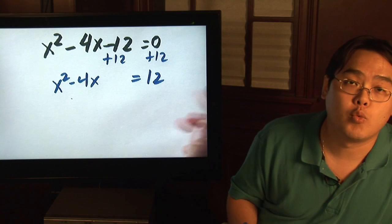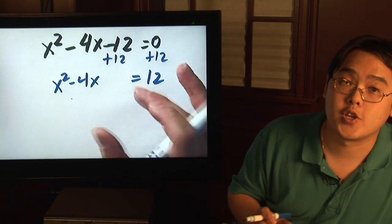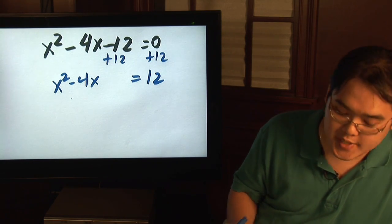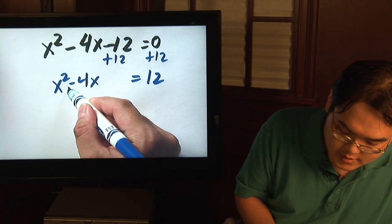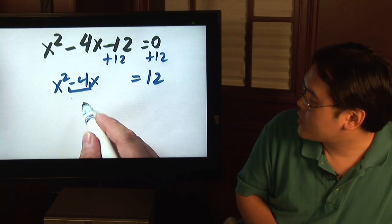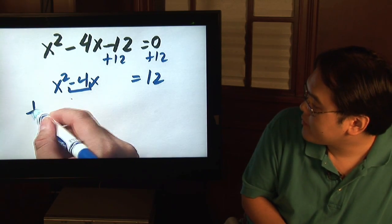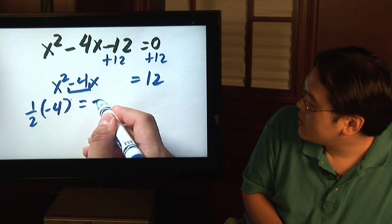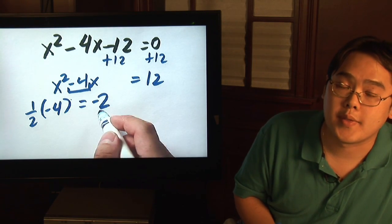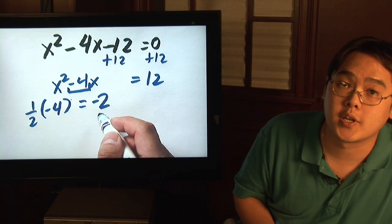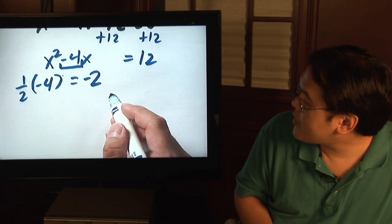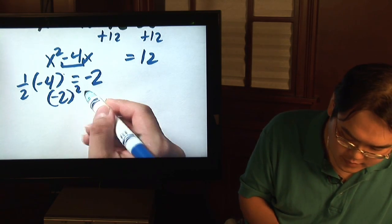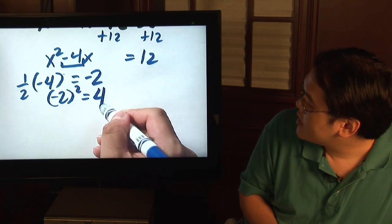Notice here, we're leaving a gap in between because there's going to be something else that's put in there. To complete the square, here's the key step. Take the number next to the x, which in this case is negative 4, and take half of it. One half of negative 4 is negative 2. Pay attention to that number too because it's always going to come back later. What you do with that number is you're going to square it. Negative 2 squared is 4.